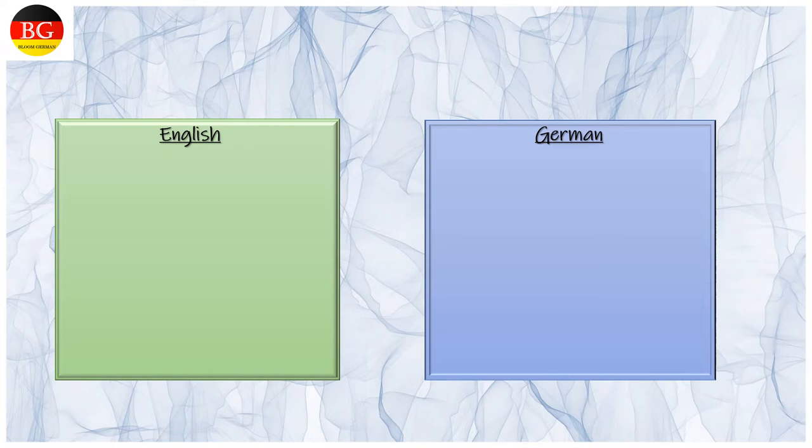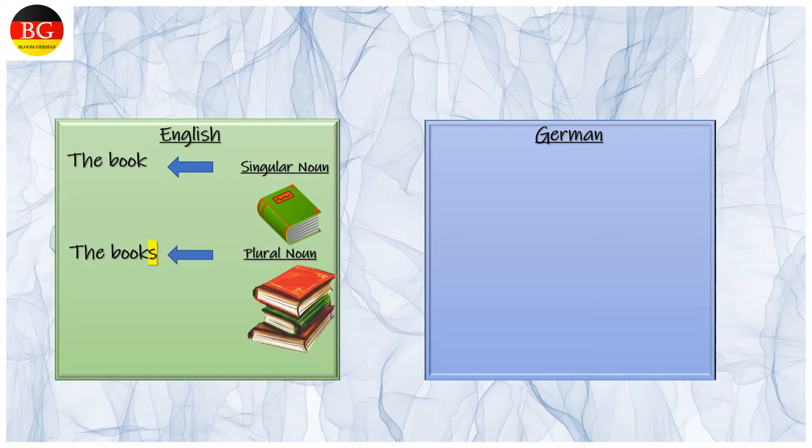Firstly, we will understand the basic difference between singular and plural noun in English and German language. In English, the noun is: the book, singular noun; the books, plural noun. Ending is getting added and definite article remains the same. In English, there is only one definite article and it is same for the singular and plural noun, that is 'the'. And there are only two endings: S or ES.